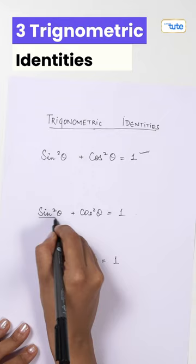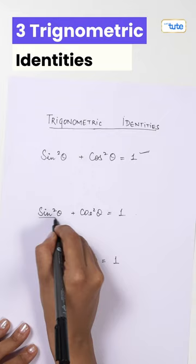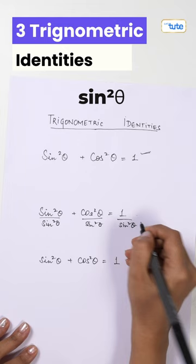So what to do? Firstly, let's divide this equation fully by sine square theta. And in order to derive the last identity, let's divide it by cos square theta completely.